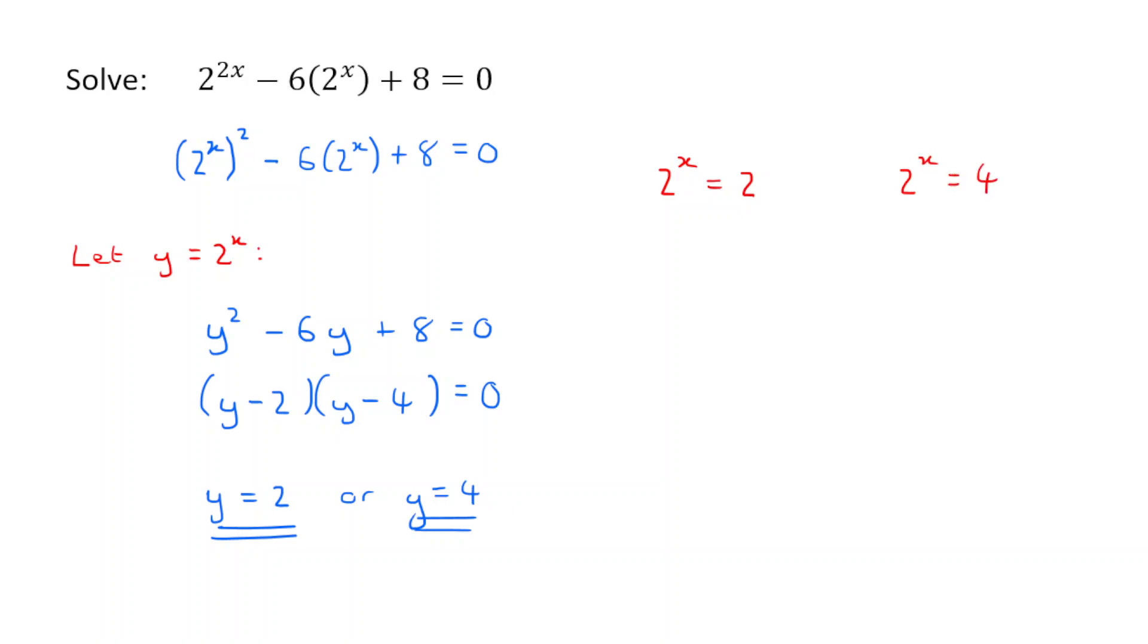And if that's the case, then it's actually fairly easy to solve for x because in this case, x must be 1 because 2 to the power of 1 is 2. In this case, x must be equal to 2 because 2 to the power of 2 is 4.